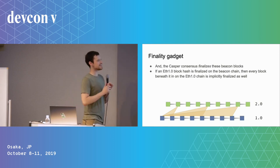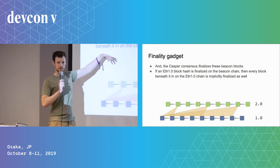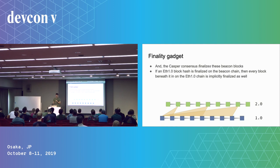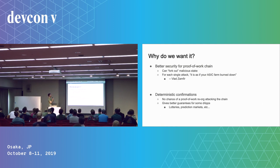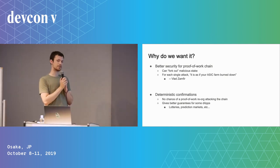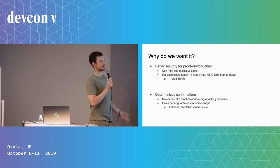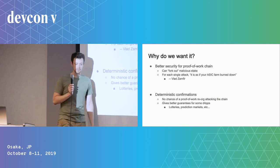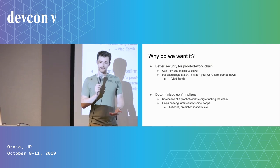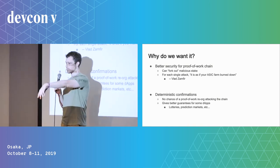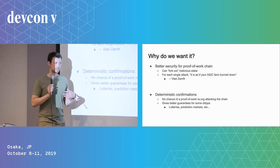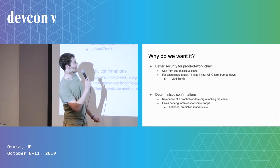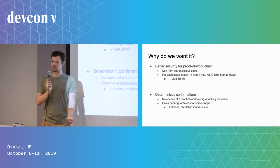What this means is that you'd need one of those massive burnings of validating ETH to cause a reorg on the 1.0 chain. As for why we want this: better security. There's a quote often attributed to Vlad — 'with a proof of stake attack it's as if your ASIC farm burned down with every attack.' On proof of work, an attacker just acquires hardware and throws hash power at the chain, creating a competing fork.